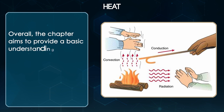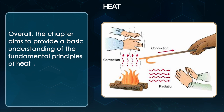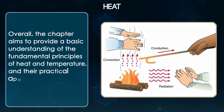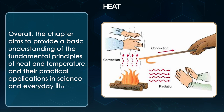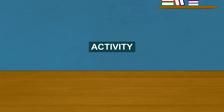The chapter also explains how different animals have adapted to live in different environments with varying temperatures. Overall, the chapter aims to provide a basic understanding of the fundamental principles of heat and temperature and their practical applications in science and everyday life.